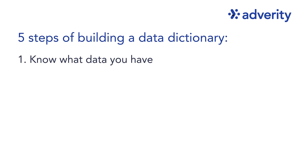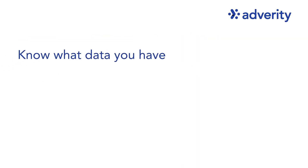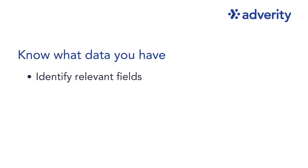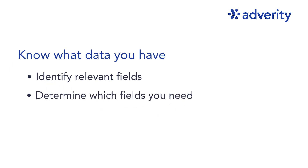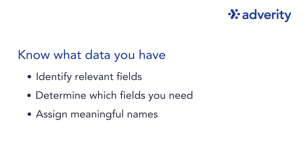The first step in building a data dictionary is to understand the data that you have. Identify the fields that are relevant for your analysis and determine which ones you need to focus on. It's important to differentiate between similar fields and assign meaningful names. For instance, if you have fields like reach and daily reach, ensure they're clearly labelled to avoid any confusion.